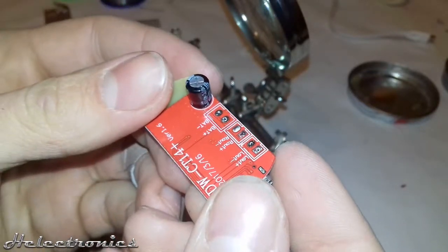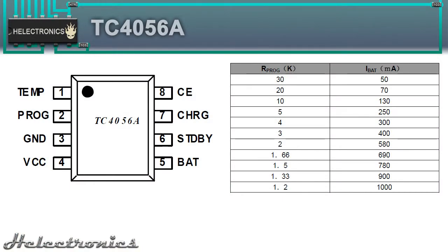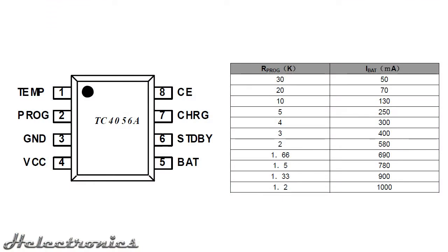Next I do some research in the TC4056A datasheet. The links for the datasheets are in the description. The charging current can be limited by changing the resistor value at pin 2.